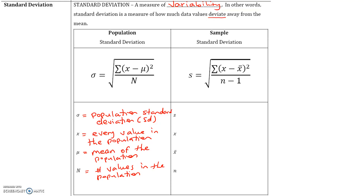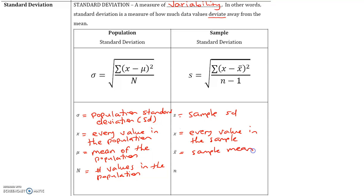S is the sample standard deviation. X is every value in the sample, X bar is the sample mean, and N is the sample size. For the sample formula, we take the square root of the sum of (X minus X bar) squared, divided by N minus 1. When calculating standard deviation by hand: start with the mean, take the difference of each data value and the mean, square that, take the sum of the squares, divide by N (for population) or N minus 1 (for sample), then square root everything.